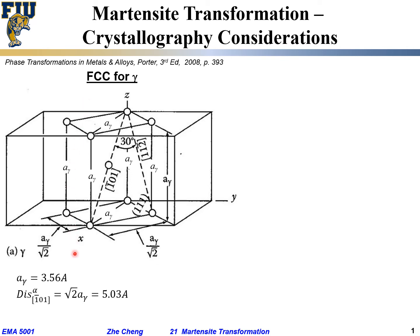From crystallography for FCC iron, we know that A_gamma, the lattice parameter for the gamma phase, is 3.56 Ångströms — the distance from one corner to a neighboring corner. In addition, the distance for the face diagonal, for example along the [1̄01] direction, is square root of 2 times A_gamma, which is 1.414 × 3.56 Å, giving us roughly 5.03 Ångströms.